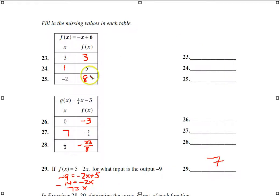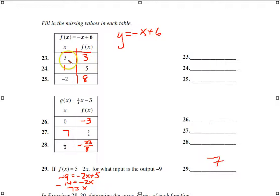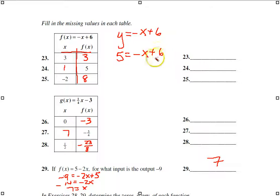For these problems, we make a t-chart with X values in one column and Y values in the other, and solve using the given equation. If X = 3: the opposite of 3 plus 6 gives a positive 3. If Y = 5, we solve for X: transposing gives -1 = -x, so X = 1. And if X = -2: the opposite of -2 is +2, plus 6 gives 8.